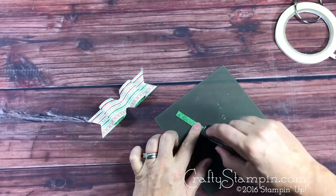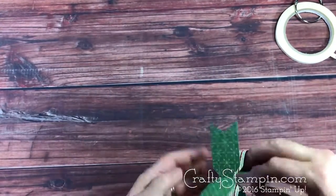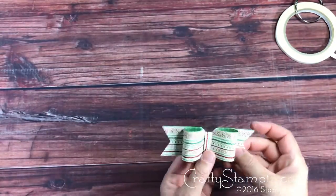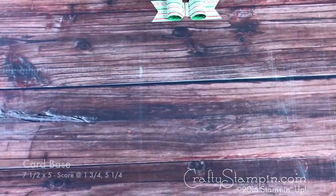Now take your bow center strip and add fast fuse to both ends. Wrap it around the middle starting from the back, and you'll probably have to trim a little off the ends.